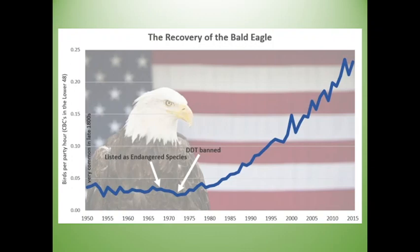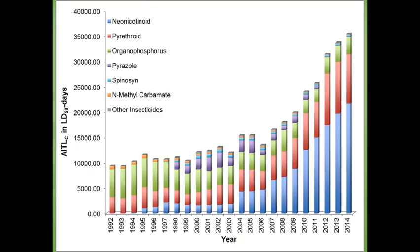The DDT ban was a success story, and pesticide companies became more aware of what their products were doing. We no longer use really persistent chemicals. Pesticides are now applied, kill the bugs, and then break down into non-harmful things relatively quickly — at least that's what's supposed to happen. What we see though is that over the last 30 years, the amount of pesticides used has only increased.